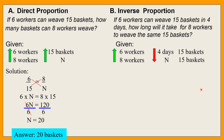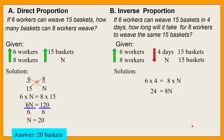Solution natin: baligtad. So imbis na mag 6 over 15, itatimes na natin — 6 times 4 equals 8 times N. So 6 times 4 is equal to 24, this is 8N. Para mawala yung 8, divide natin by 8. Cancel yung 8. N therefore is equal to 3.